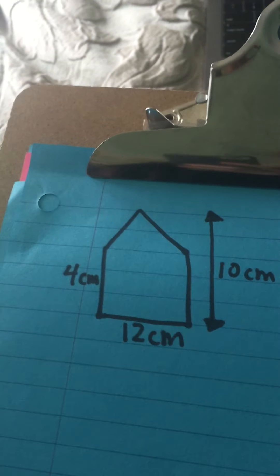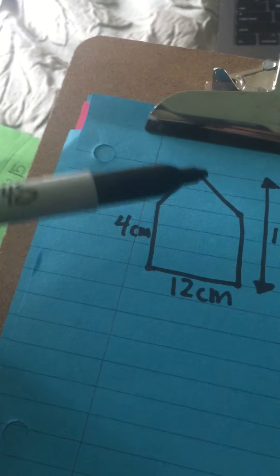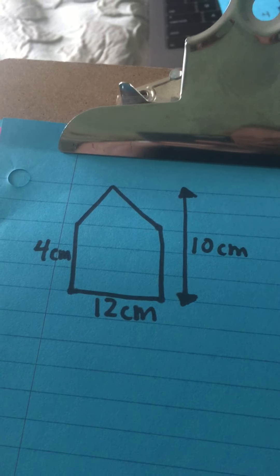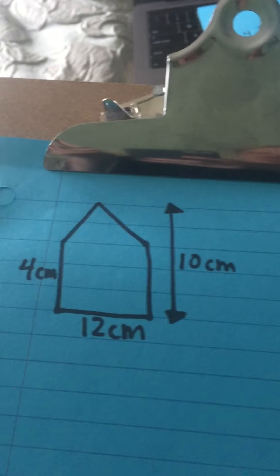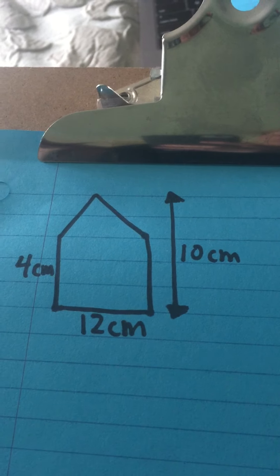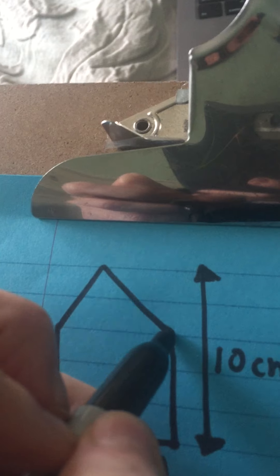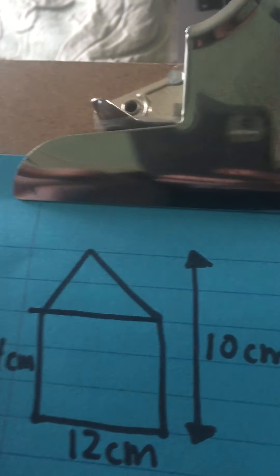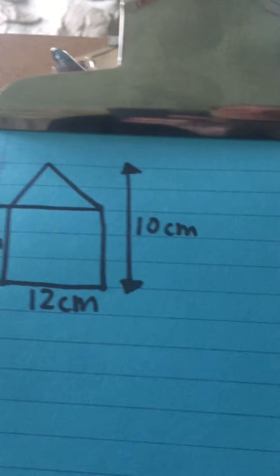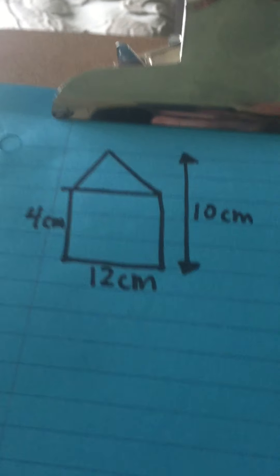But what I know is I can turn this into two shapes that I know how to find the area of. What two shapes do you think we can turn this into? If you said a triangle and a rectangle, you're right. Now we're missing some of the values that we need, but they've given us all the information.